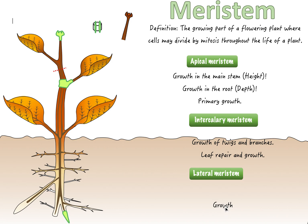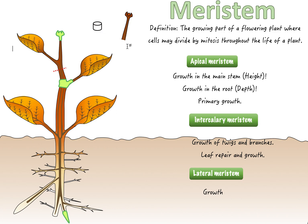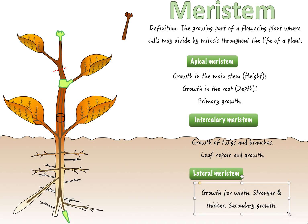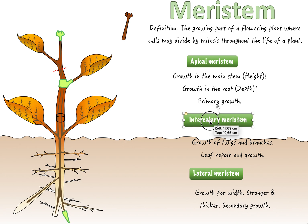The last type is the lateral meristem. It is located in the stem — not near the top and not near the branching points, but in the stem itself. It has a special job: it causes growth in width, making the stem thicker and stronger. This is called secondary growth — primary growth is growth in height, secondary growth is growth in width.